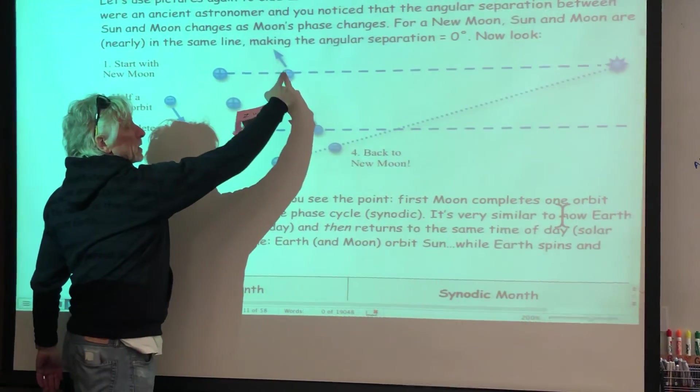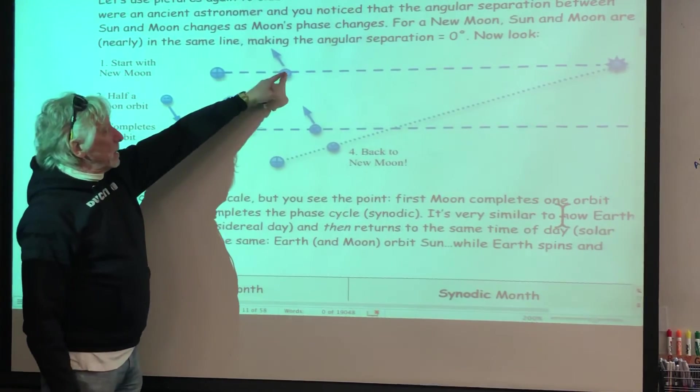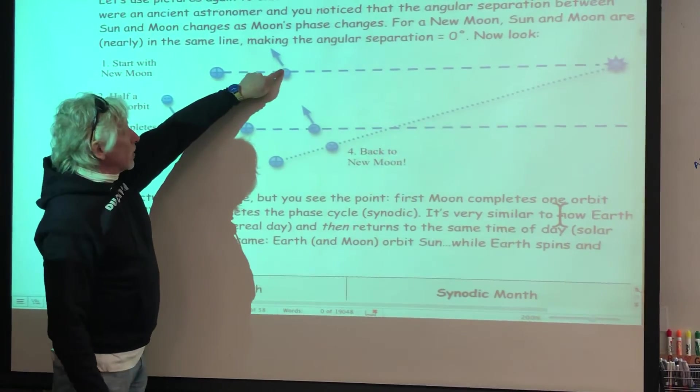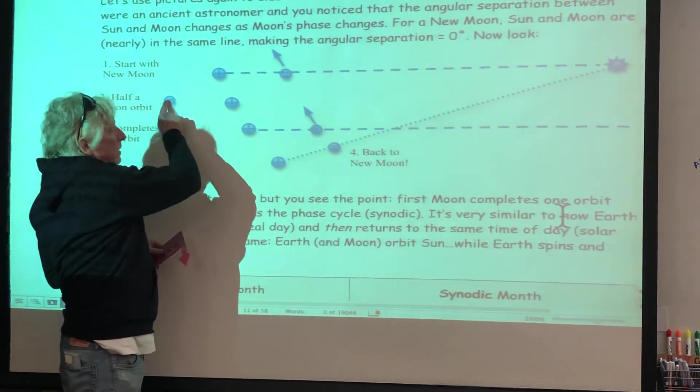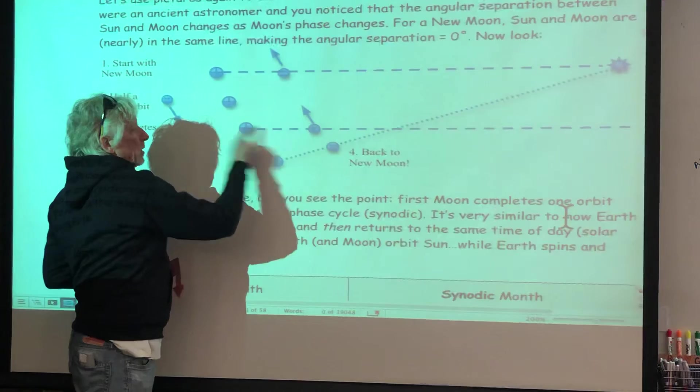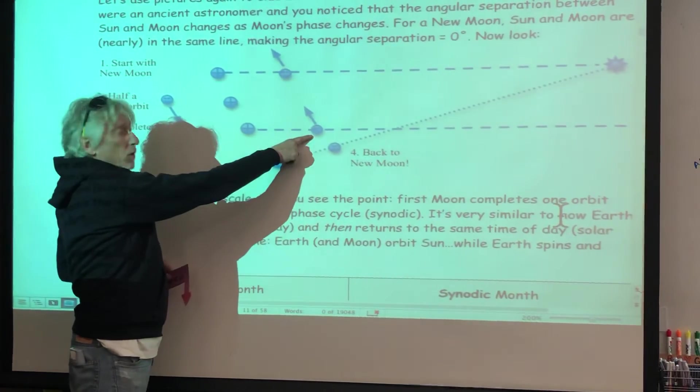So to go around once is to go around halfway and then again. So from here to here is going around once.